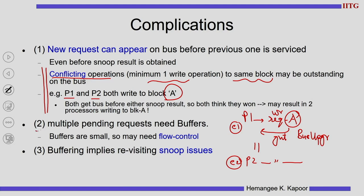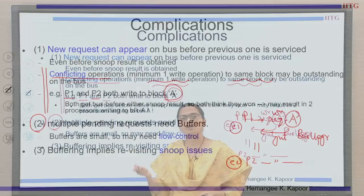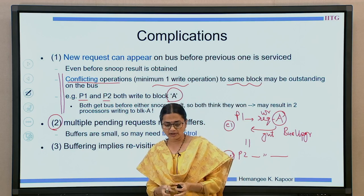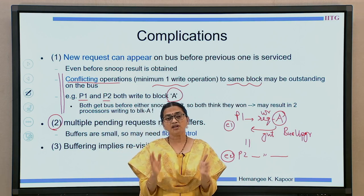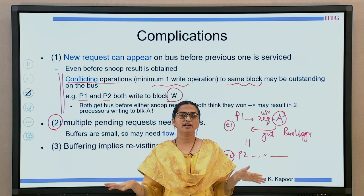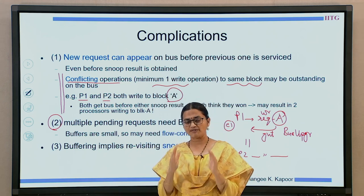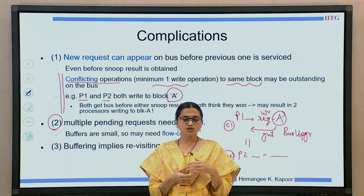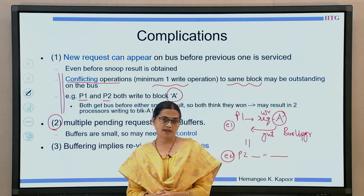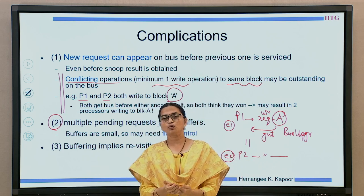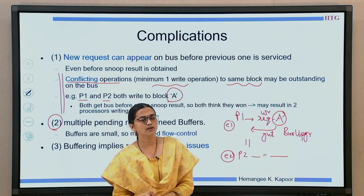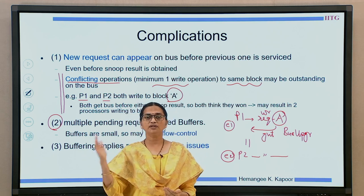The second thing to take care of is flow control. When I have a split transaction bus, requests are buffered with every processor and I need to limit how many requests are buffered before the responses come. In any scenario with storage elements, buffers, or FIFOs, you need to worry about what happens if they become full. If the FIFO becomes full and the system is still sending more and more requests, this is the flow control problem — how to manage the flow of data through these limited buffers.